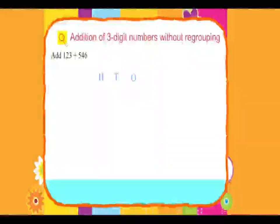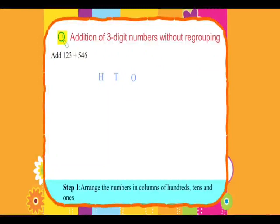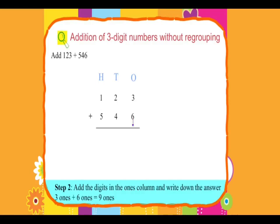Add 123 and 546. Step 1: Arrange the numbers in columns of hundreds, tens, and ones. Step 2: Add the digit in the ones column and write down the answer. 3 ones plus 6 ones equals 9 ones.